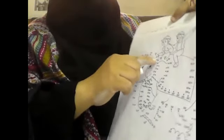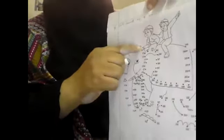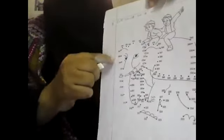See here. This is 301. From here we have to start connecting and we have to make the picture. This is worksheet 6 for 2nd class.